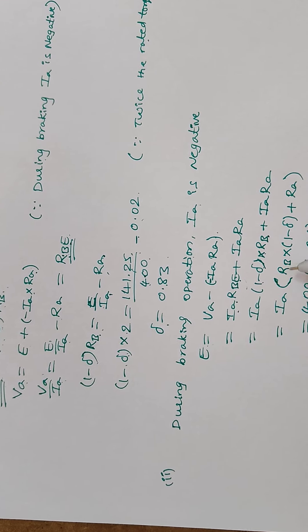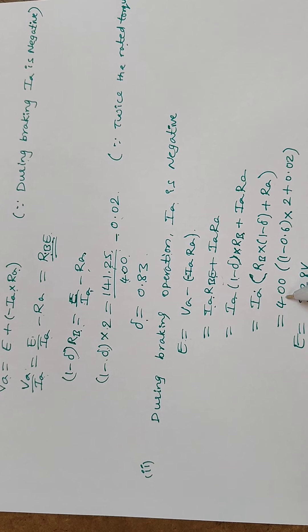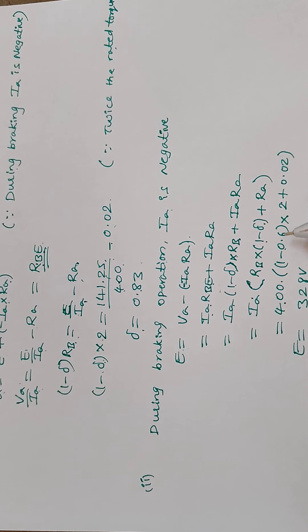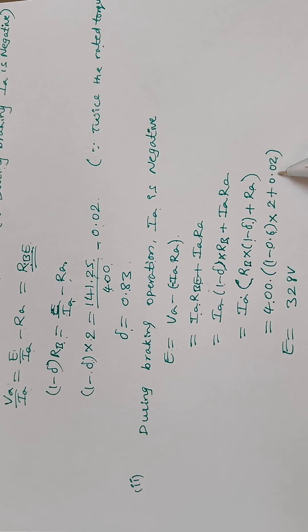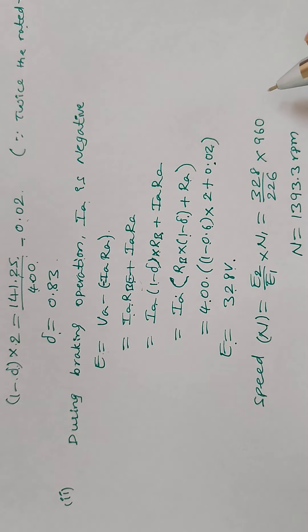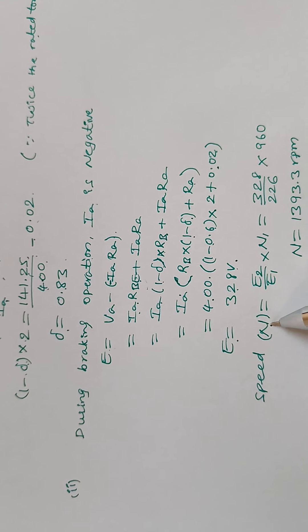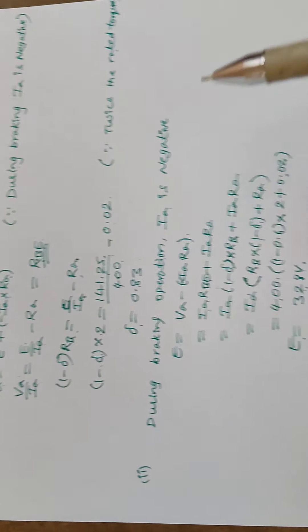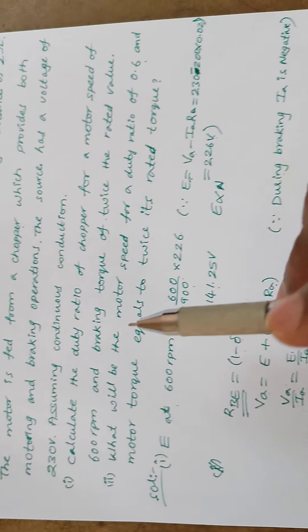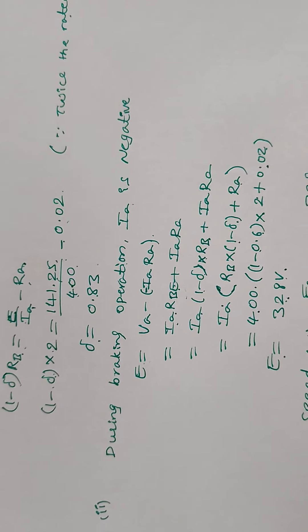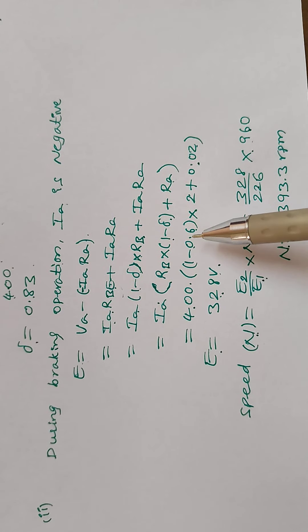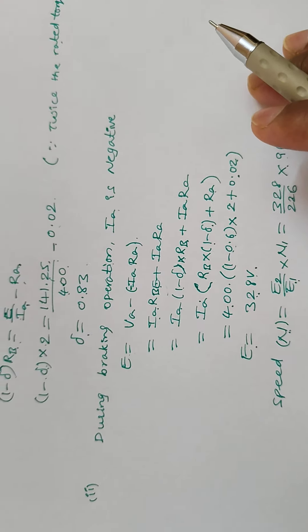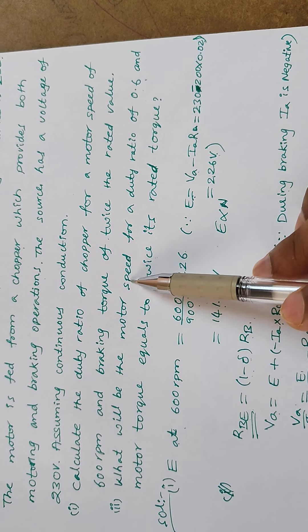Armature current Ia is twice the rated value: 2 times 200 equals 400 A. Rb is 2 ohms, and δ is 0.6, with Ra equal to 0.02 ohms. Substituting all values gives E equal to 328 volts. Using E directly proportional to N: N2 equals (E2 by E1) times N1, where E1 is 226 volts and N1 is 960 RPM. The new speed at duty ratio 0.6 is 1393.3 RPM.